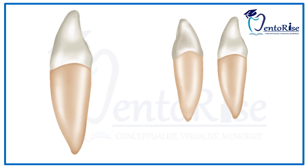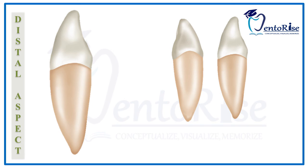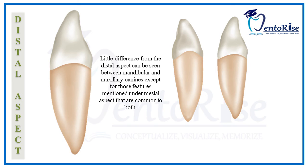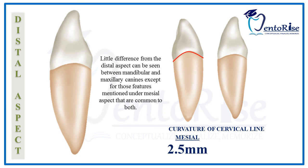The distal aspect of a permanent mandibular canine is very similar to that of the mesial aspect, with one difference: the curvature of the cervical line on the mesial aspect is greater than the curvature of the cervical line on the distal aspect. Please observe the figure carefully.